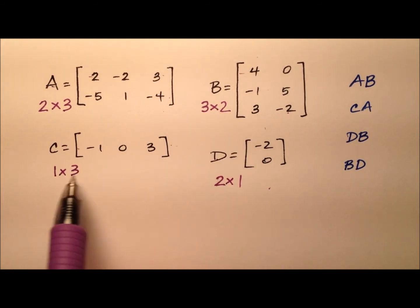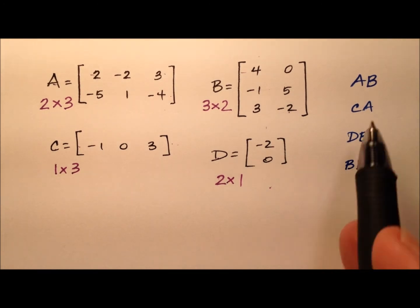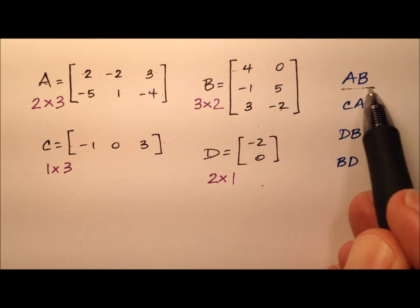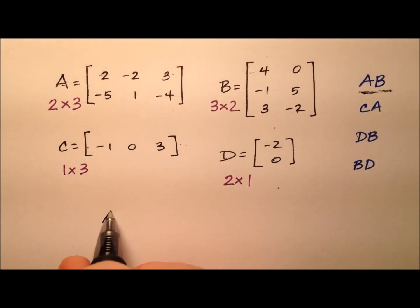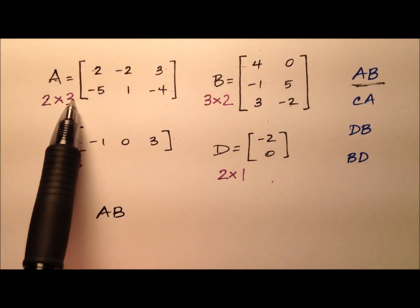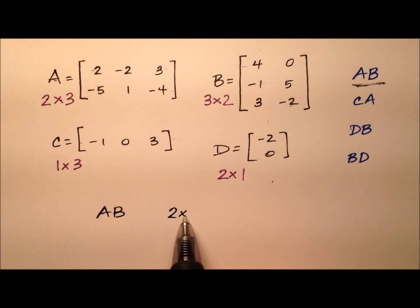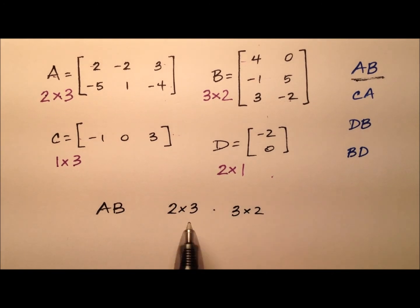Okay, so we kind of have a variety of dimensions here, and we'd like to try to figure out what the dimensions of each of these product matrices is going to be. So this first one is going to be A times B, so AB. It looks like we're going to take a 2 by 3 and multiply it by a 3 by 2. So let me write that down: a 2 by 3, we're going to multiply that by a 3 by 2. Alright, so the values inside here, this 3 and this 3 are the same,